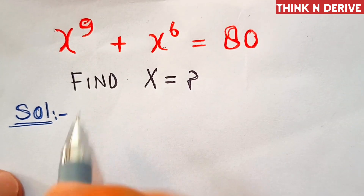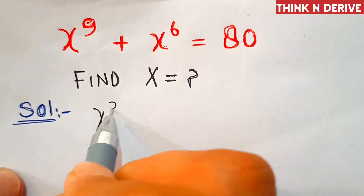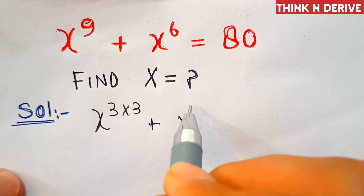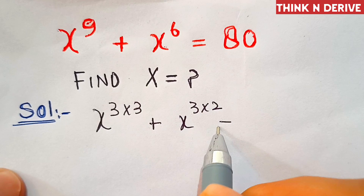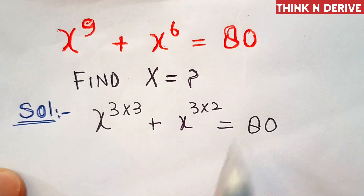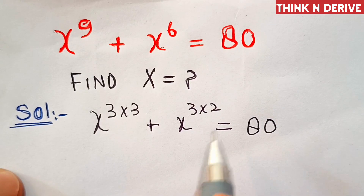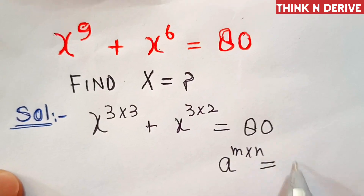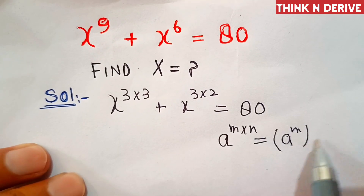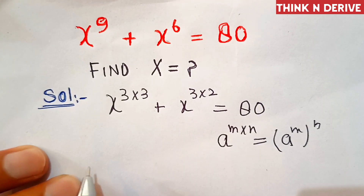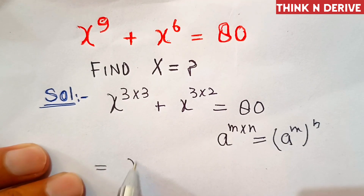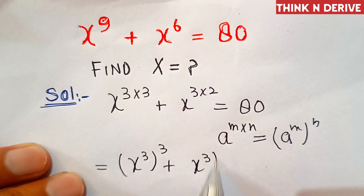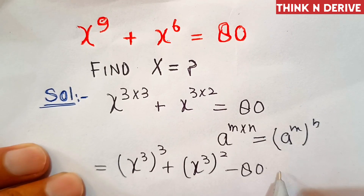Now in the first step, we can write x power 9 as x power 3 into 3, plus x power 3 into 2, equal to 80. We'll use a formula here: a power m into n is equal to a power m·n. So we can write this as x cube cubed plus x power 3 squared minus 80 equal to 0.